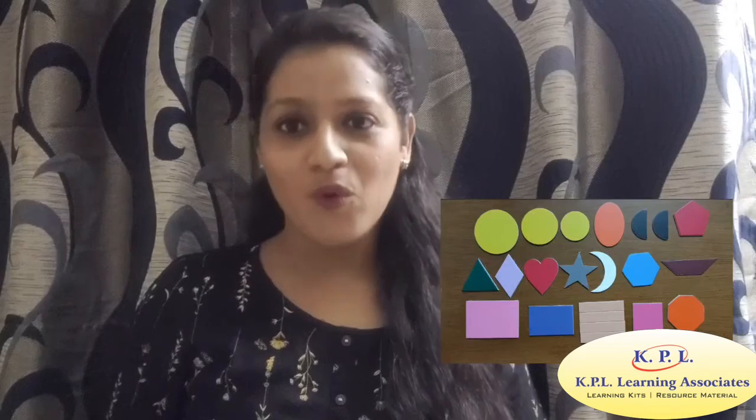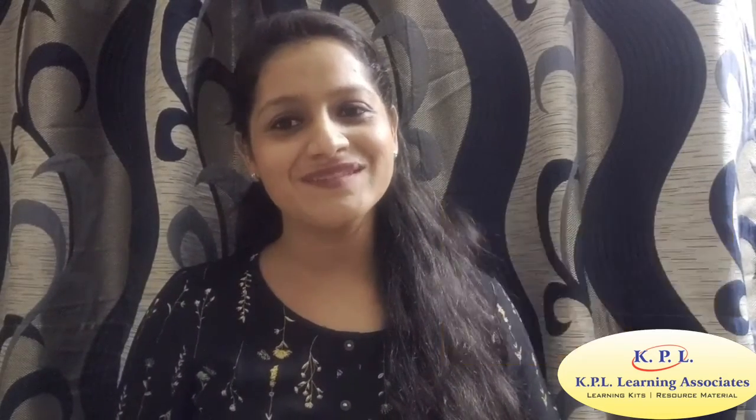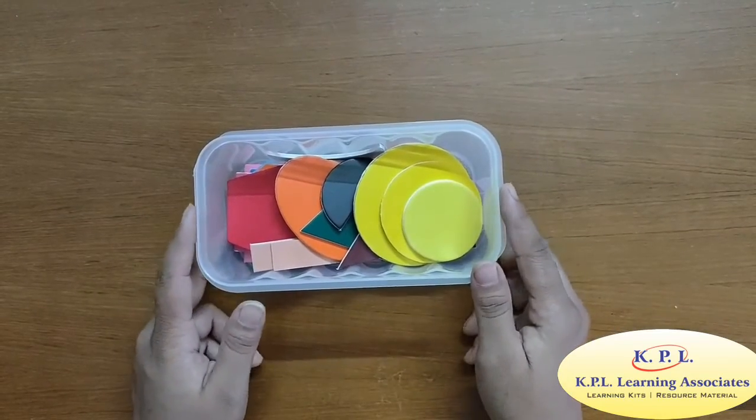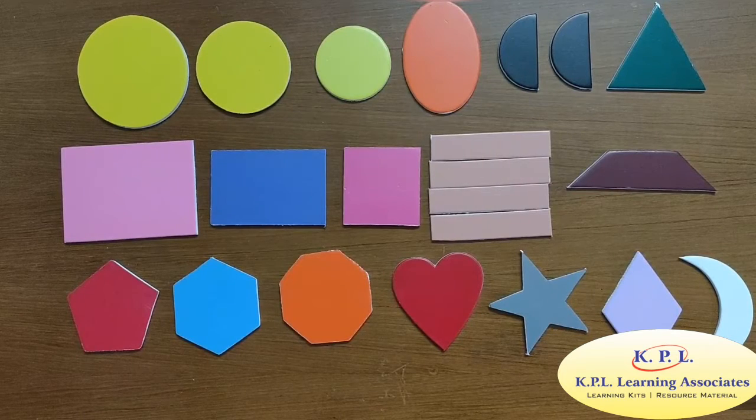So make a tree, boat or clown. Just be happy and have fun around. This is KPL shape set. There are 22 shape pieces in this box.